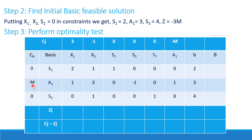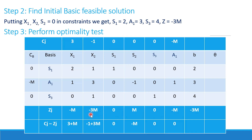Computing Zj: it is Cb multiplied by the column Aj. For the x1 column: 0×2 + (-M)×1 + 0×0 = -M. We compute Zj for each column, giving values like -M, -3M, 0, -M, 3M, -3M. Then Cj - Zj is computed: for x1 it is 3 - (-M) = 3 + M; for x2 it is -1 - (-3M) = -1 + 3M. We now perform the optimality test to check whether the solution is optimal.